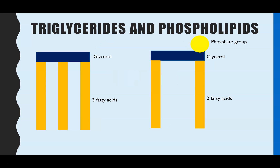First of all, have a look at the difference between these two lipids you need to know about. They both contain a glycerol molecule, which is a three-carbon compound, and they contain fatty acids. But a triglyceride, as the name suggests — tri meaning three — has three fatty acid chains. A phospholipid has only two chains, and instead of the third chain, that is replaced by a phosphate group.